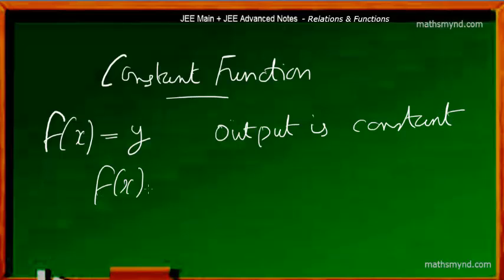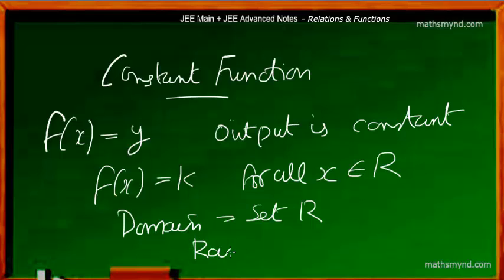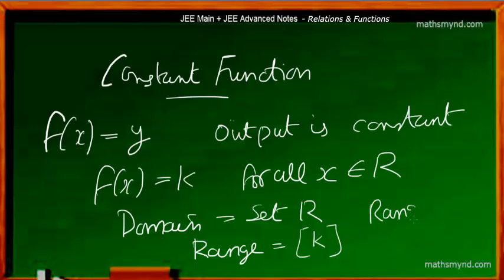So f of x is equal to k, where for all x is an element of capital R as a set of real numbers, is how we define a constant function. Naturally the domain is the set R, the set of all real numbers, and the range is of course the output — in this particular case it is a constant. So the range is a single element set.